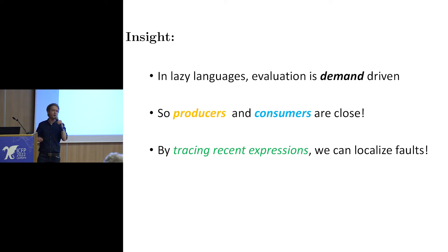So the insight here: Haskell is a lazy language, so evaluation is demand driven. You don't actually produce data until right before you need it. That means when you consume data, it's usually been produced right before, at least for small programs. If we trace recent expressions - what were you doing right before the error happened - we can figure out what the faults are. We don't have to look at the whole program. Someone gets murdered, you don't think about what he was doing 10 years ago, you want to know what he was doing right before.